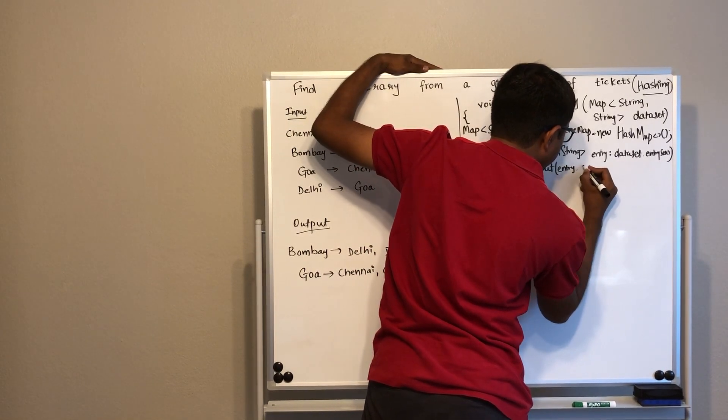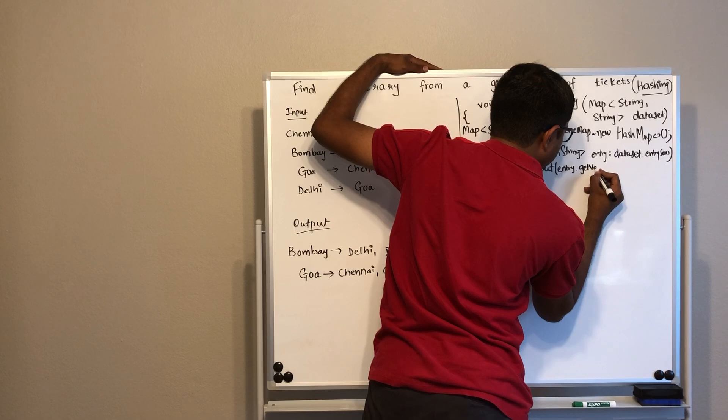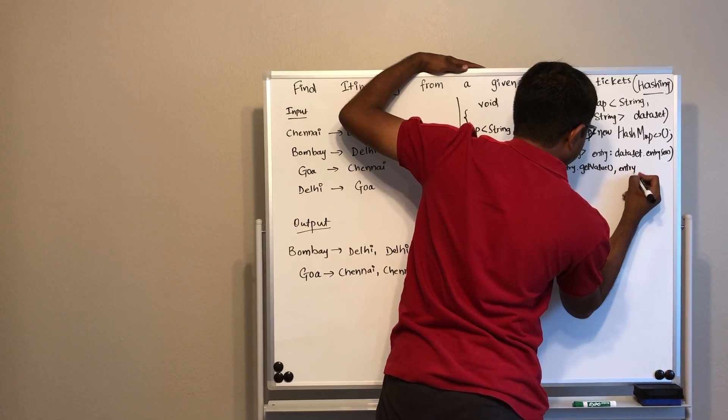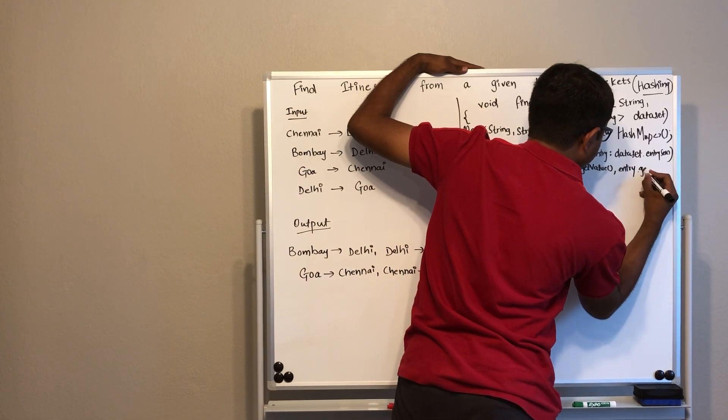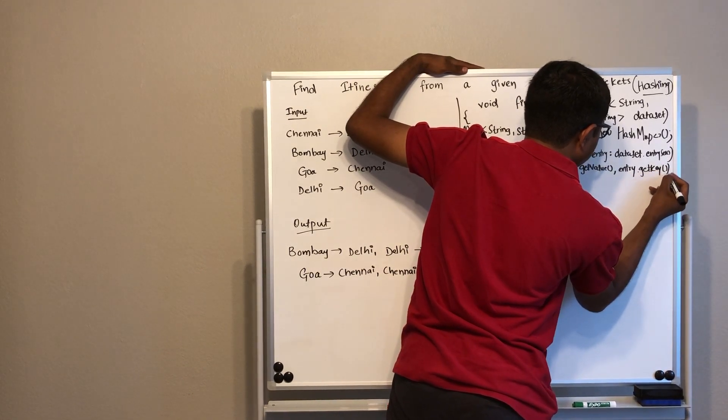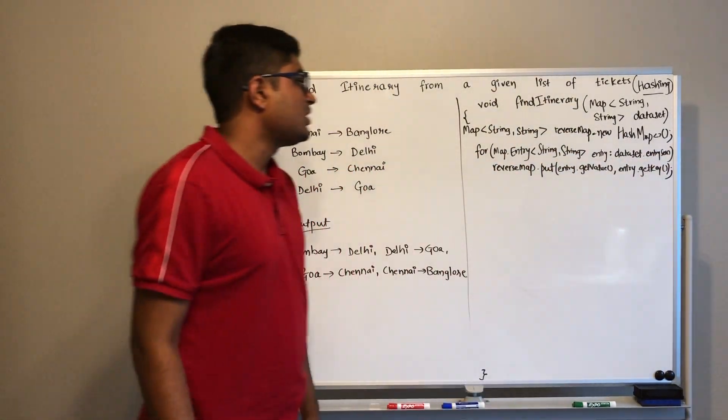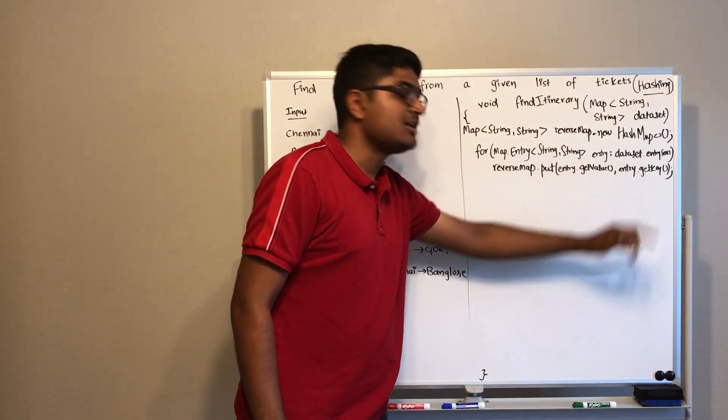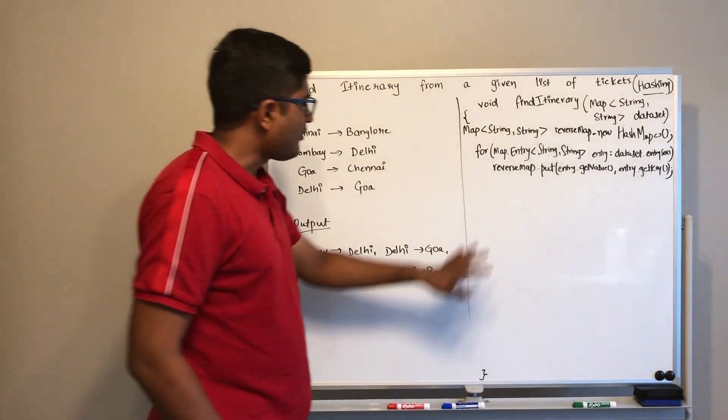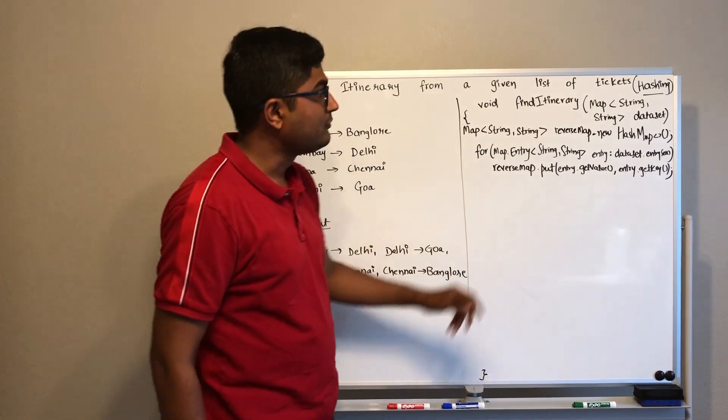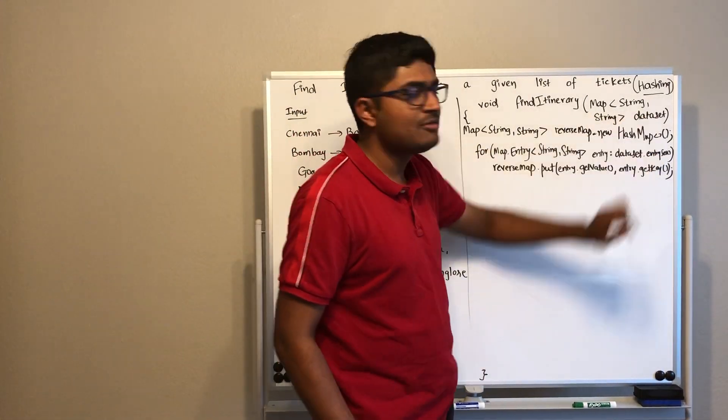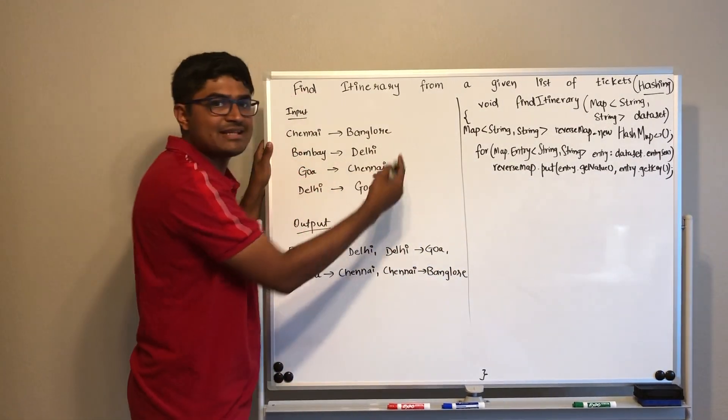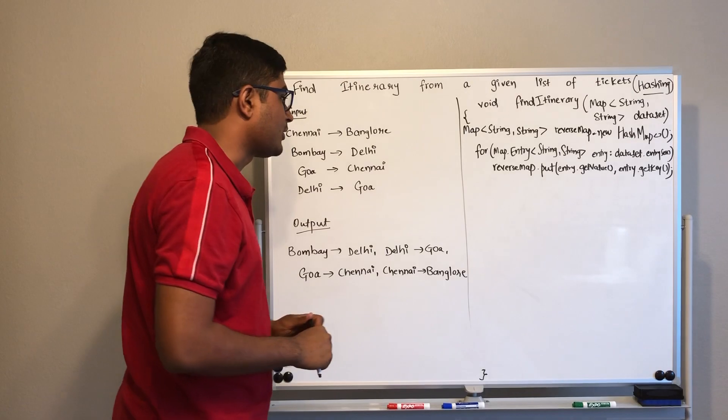How are we going to find the output path? So now you can see we created a reverse map and added all the values in the reverse order. Now that we have the reverse map ready, we will again iterate through this original map and we will see that for every key, is there a key in the reverse map? If not, then that's our starting point.